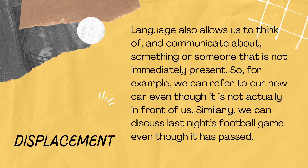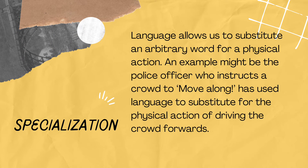Displacement: language also allows us to think of and communicate about something or someone that is not immediately present. For example, we can refer to our new car even though it's not actually in front of us. Similarly, we can discuss last night's football game even though it has passed. Specialization: language allows us to substitute an arbitrary word for a physical action. For example, a police officer instructing a crowd to move along has used language to substitute for the physical action of driving the crowd forwards.